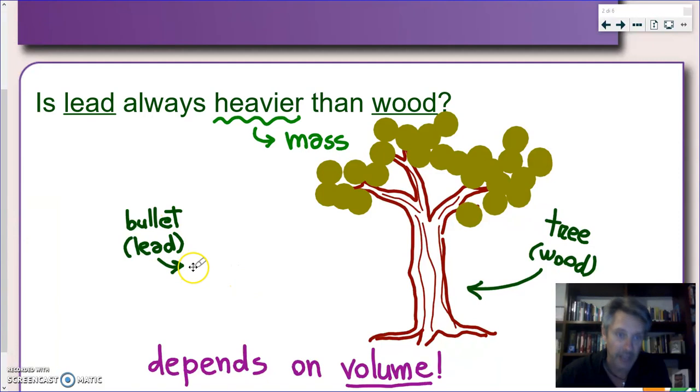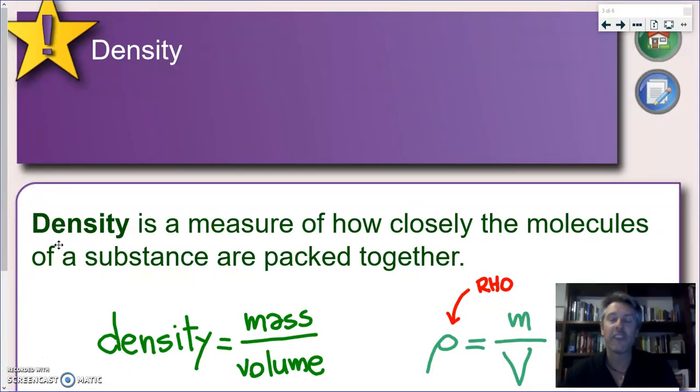So let's imagine we have two objects made respectively of lead and wood. A bullet, at least the head of a bullet is made of lead and a tree, at least most of the tree is made of wood. I hope there is no doubt here that the object with more mass is the tree. So this is not always true. So what is the difference between these two? Of course it's the volume, so the amount of space these two objects take.